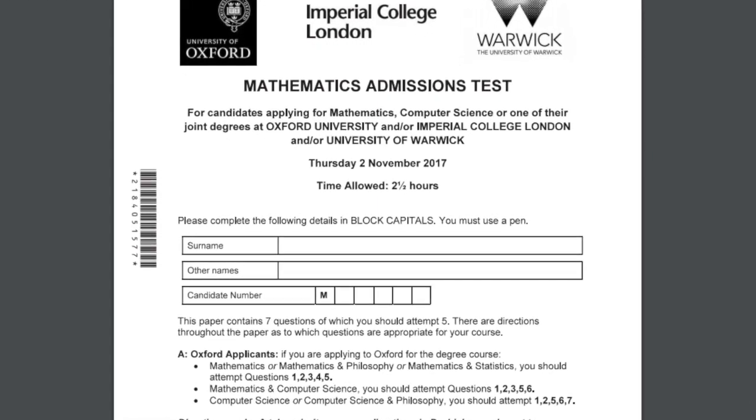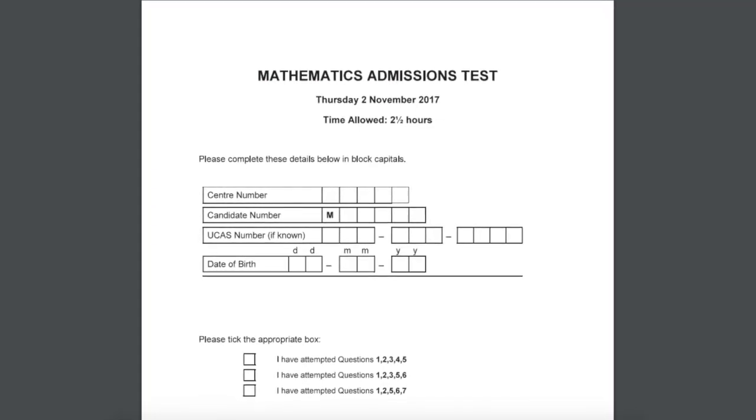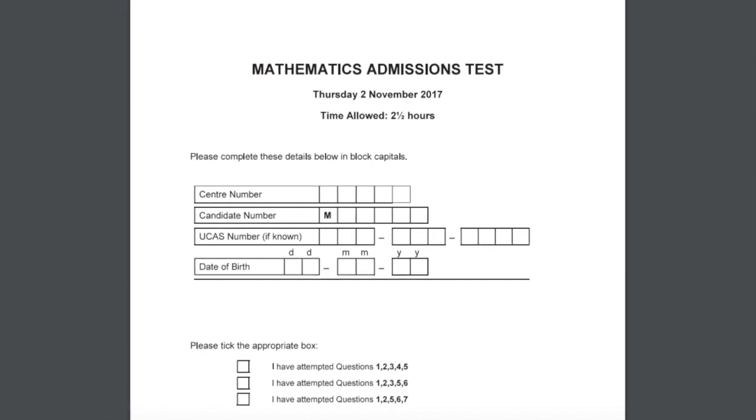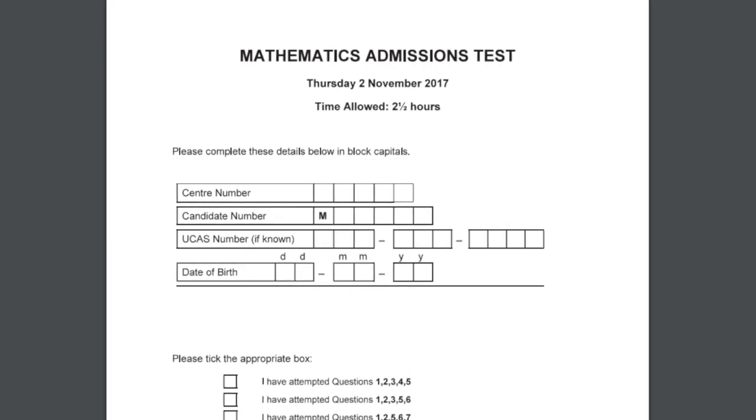This is an exam you have to sit if you apply to either Oxford or Imperial College London. It is sat in November of each year, usually at the start of year 13, so you'll typically be 17 or 18 years old, and it's a two and a half hour paper.